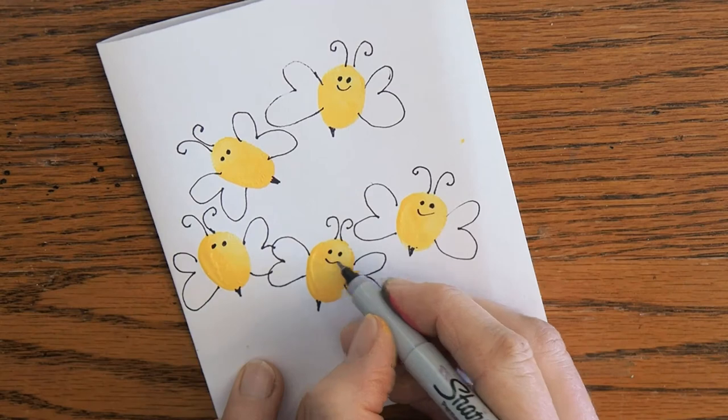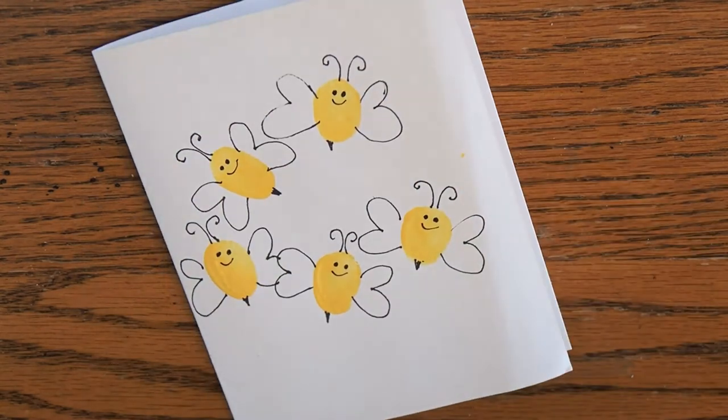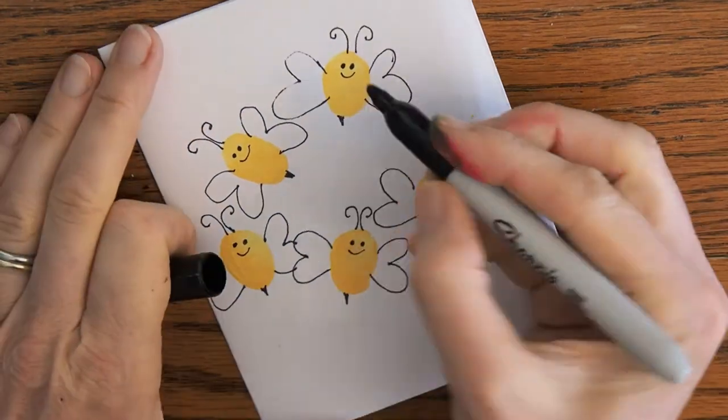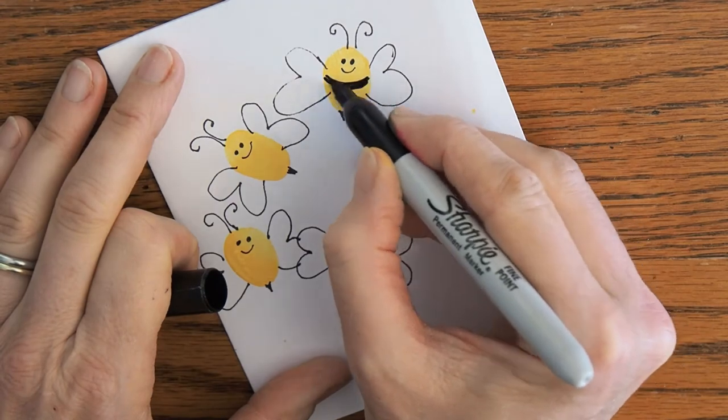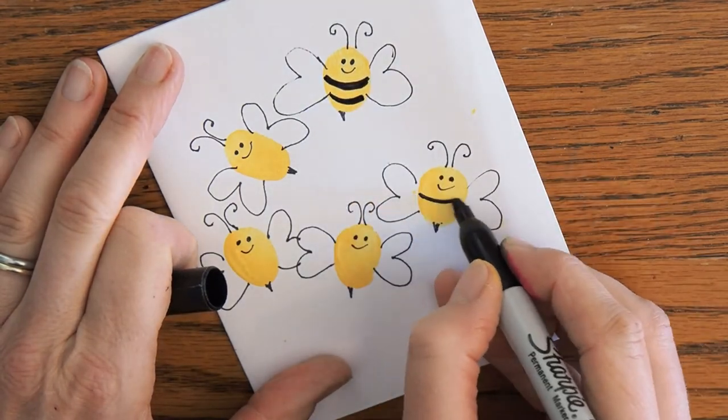And you can see how quick and easy it is to do bumblebees also. There they just need their stripes. Now they look all dressed up and ready to go.